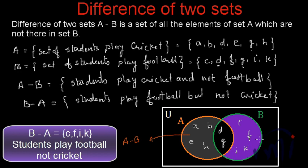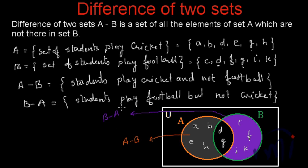The gray section represents A minus B and the purple section represents B minus A. So this is the meaning of the difference of two sets and how we represent them using a Venn diagram. In the next video we are going to learn about the symmetric difference of two sets. Keep watching MathSmart — bye-bye till then.